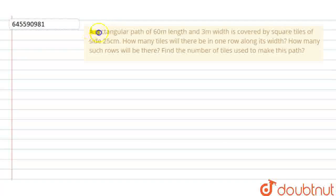Question is: a rectangular path of 60 meter length and 3 meter width is covered by square tiles of size 25 cm. How many tiles will be in one row along its width? How many such rows will be there? Find the number of tiles used to make this path.